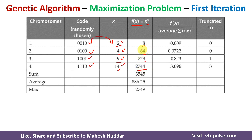Once you calculate these values, the next step is to calculate the summation and then the average of these values. The summation is 3545, divided by 4, giving an average of 886.25. The maximum among these four values is 2744.